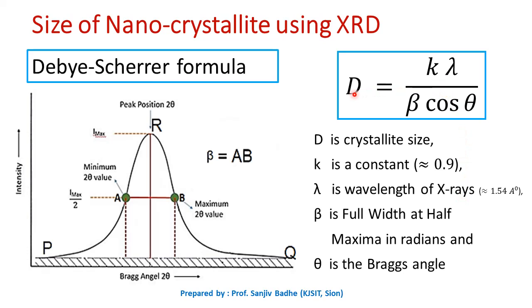K is a constant which is approximately equal to 0.9 and lambda is wavelength of X-rays. So these values can also be substituted and D, the size of nanocrystallite can be calculated. So this is how size of nanocrystallite can be calculated using Debye-Scherrer's formula and data obtained in X-ray diffraction experiment.